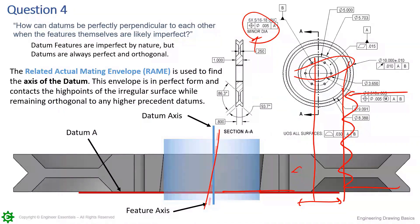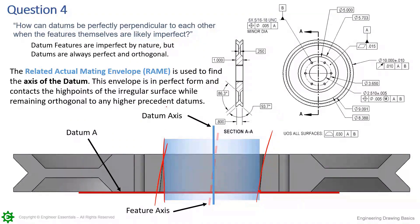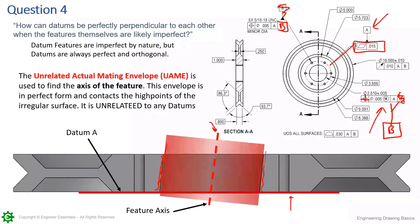Now we're going to locate that axis back to the datum axis. We're not locating it to the feature's axis because the feature's axis is going to be imperfect. So again, as inspectors, as machinists, as designers, we need to understand that these axes are different and they're created in two different ways. They're just utilizing two different envelopes to capture these axes. You have to have a perfect envelope expand and catch the high points, and those high points either are going to be orientated to something or not orientated to something, depending on the related actual mating envelope or the unrelated actual mating envelope.